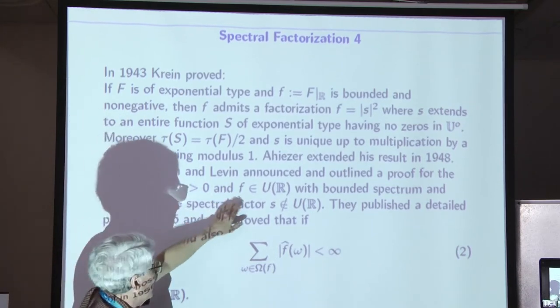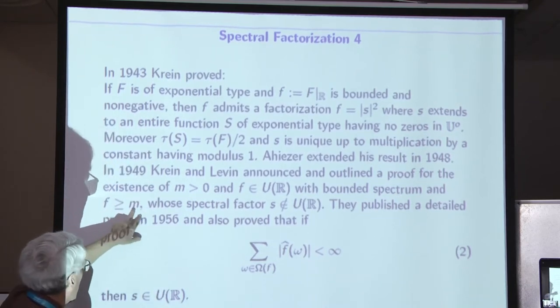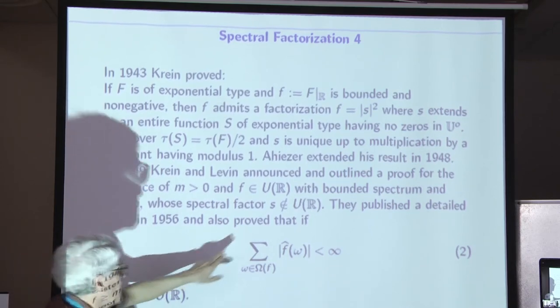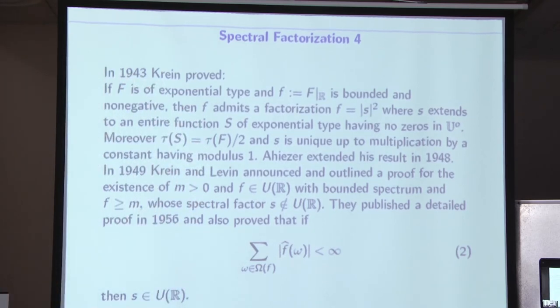Now in 1943, Krein proved that if you have a function of exponential type and bounded on the real axis and non-negative, then it admits a spectral factorization, where this function s extends to an entire type, a function s of exponential type, having no zeros in the open half plane, and the exponential type is half that of f. And s is unique up to multiplication by a constant of modulus one. So Aheser extended that result to a larger class of entire functions. So now in 1949, Krein and Levin announced and outlined a proof for the existence of the following. If m is positive, and f with a bounded spectrum, of course f is real valued, larger than or equal to m.